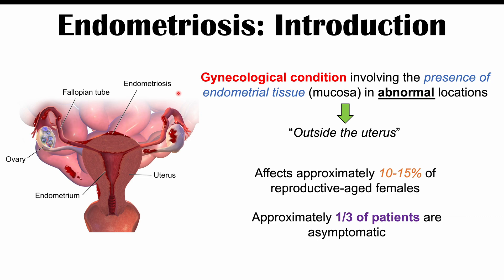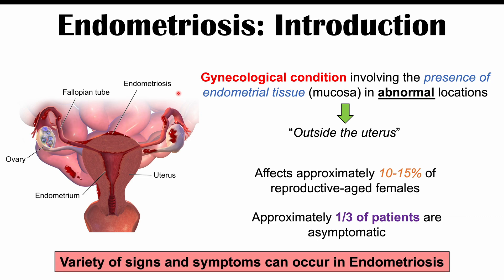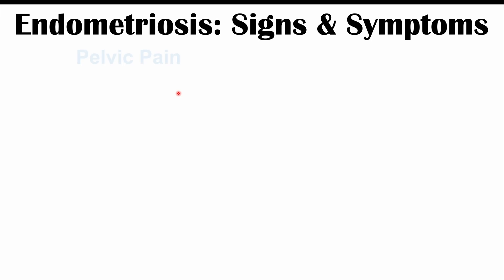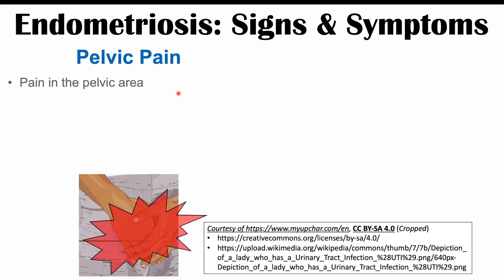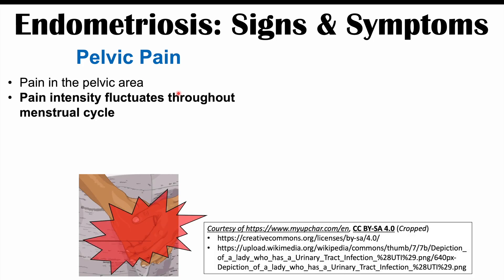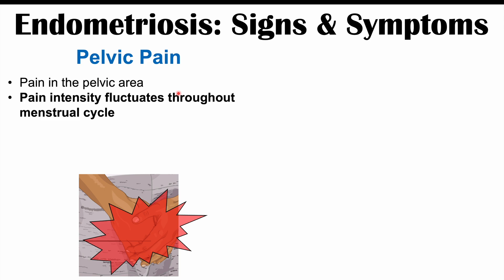The topic of this lesson is the symptoms that can occur in the rest of the patients. There are a variety of signs and symptoms that can occur in endometriosis. In patients who do experience symptoms, one of the biggest symptoms is pelvic pain — pain in the pelvic area — and this pain has the characteristic feature that its intensity fluctuates throughout the menstrual cycle.